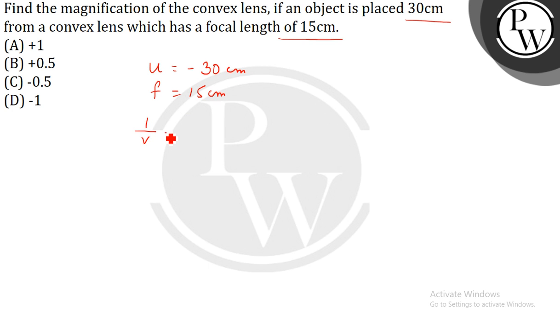By lens formula, 1 by V minus 1 by U is equal to 1 by F, or 1 by V is equal to 1 by F plus 1 by U.